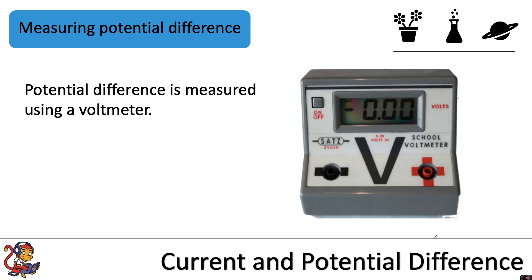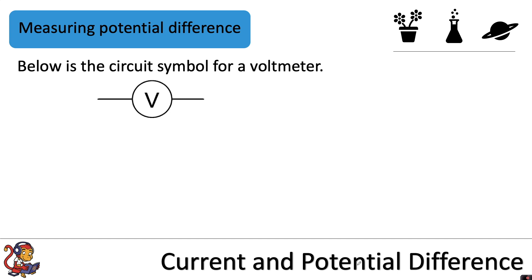Potential difference is measured using a voltmeter. The units for potential difference are volts or a capital V. Below is the circuit symbol for a voltmeter.